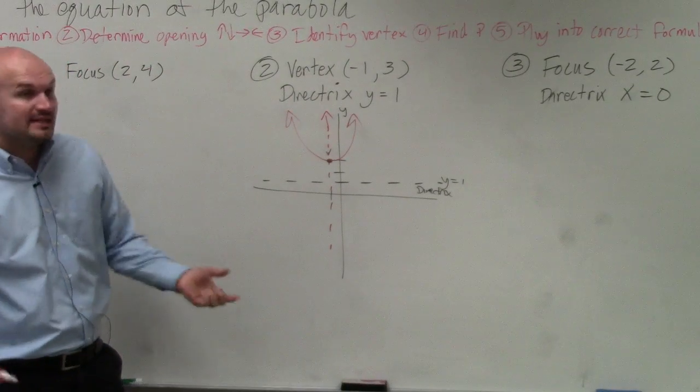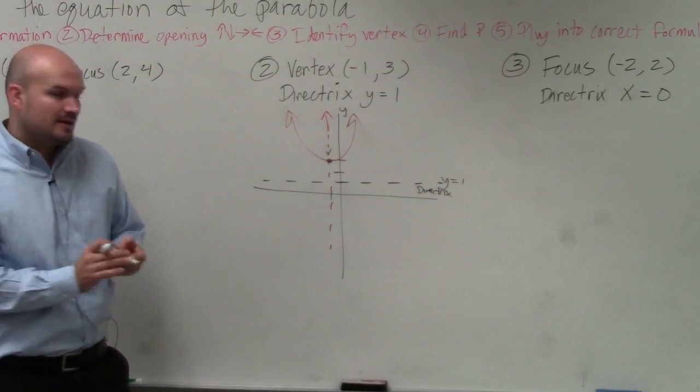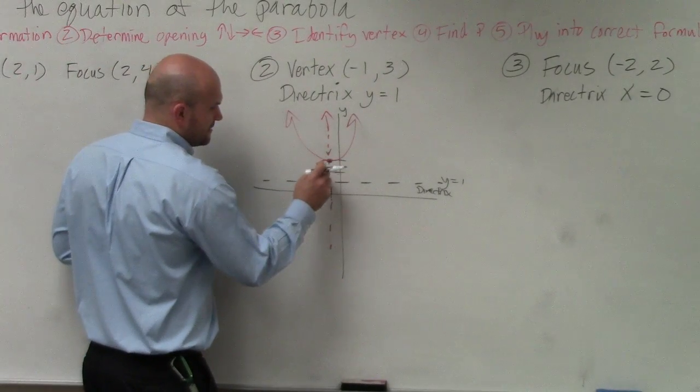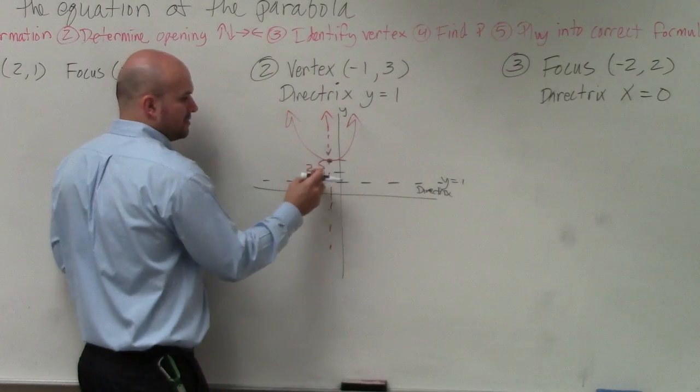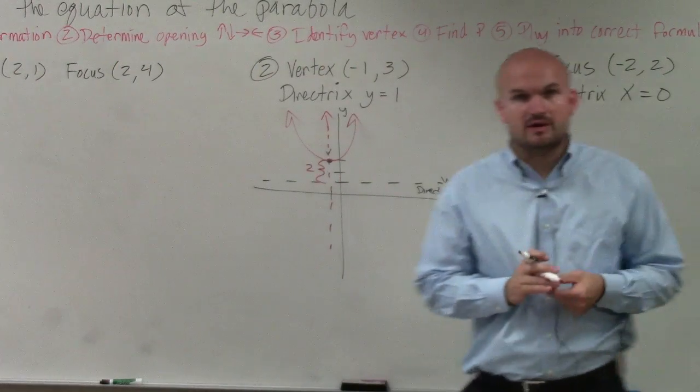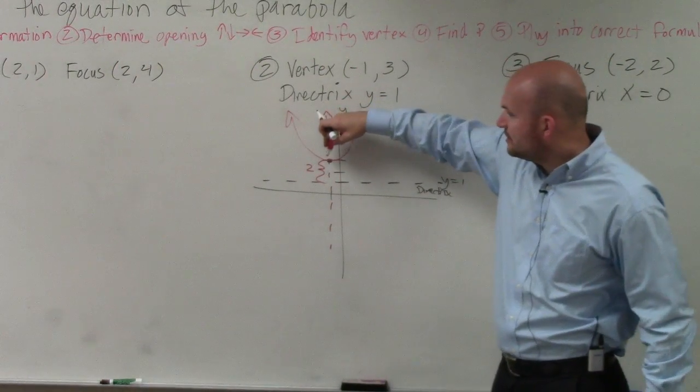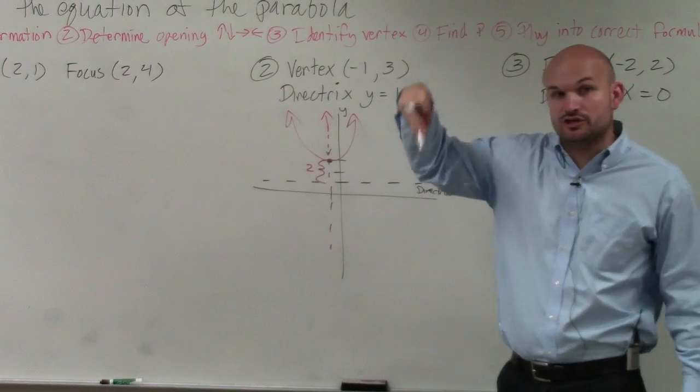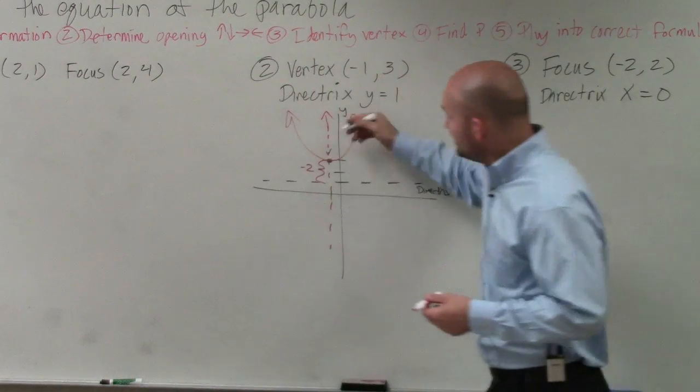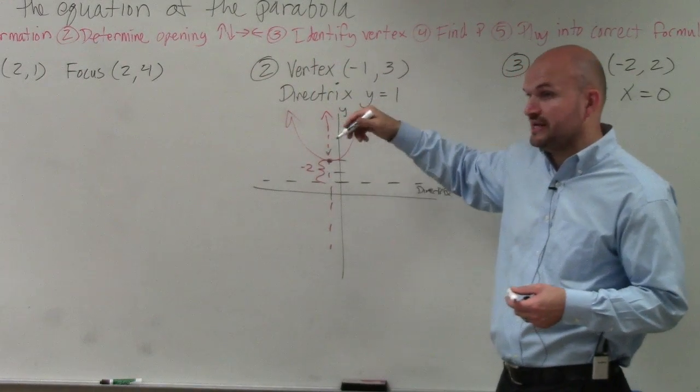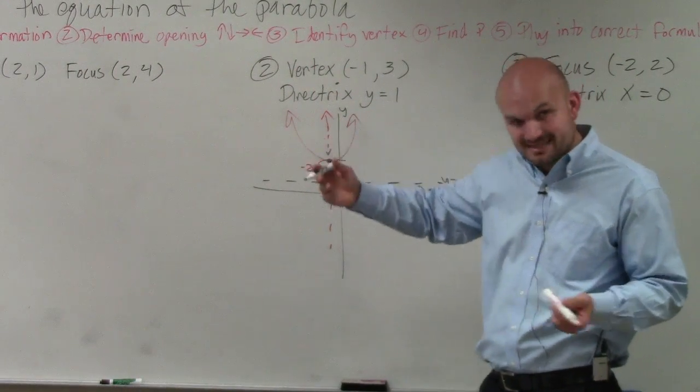All right, so now we need to identify what the value of p is. Now, we look at this distance between the vertex and the directrix, and that distance is 1, 2, right? But the distance from v to the directrix, you're actually going where? Down. So that distance would be negative 2.